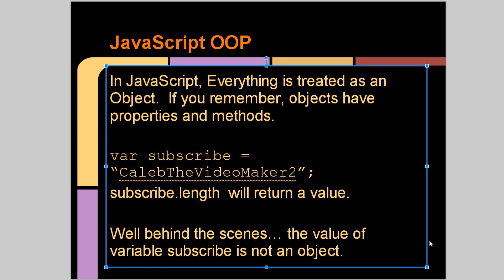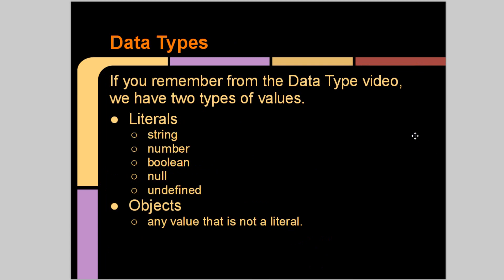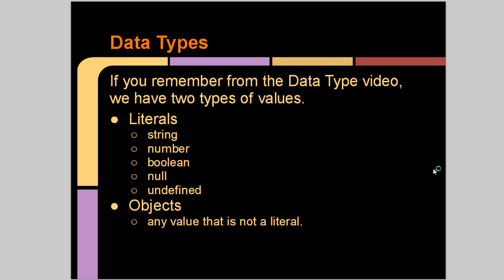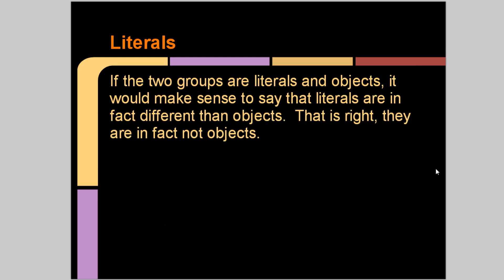Behind the scenes, the value of the variable subscribe is not an object, it's a literal. We talked about this in data types a little bit, but now we're going in more depth. If you remember from the data type video, we have two types of values: literals and objects. Literals are strings, numbers, boolean, null, and undefined. If the two groups are literals and objects, it would make sense to say that literals are in fact different than objects. They are in fact not objects.